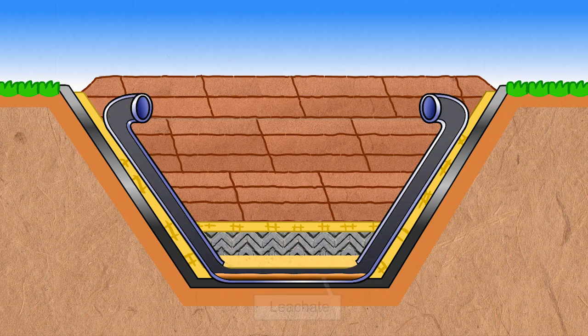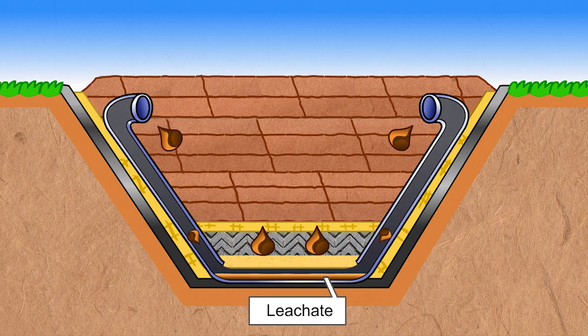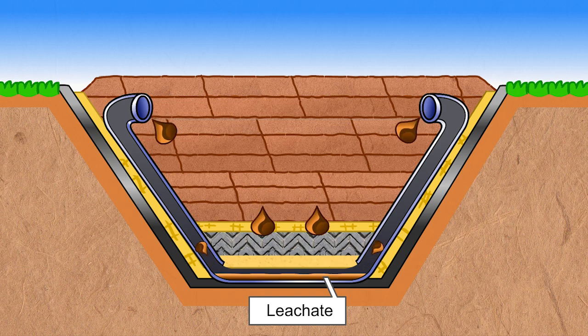In our bioreactor, the fluid collected, called leachate, is recirculated along with other fluids into the waste to enhance decomposition.